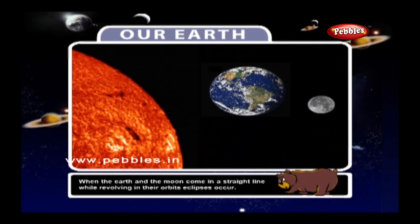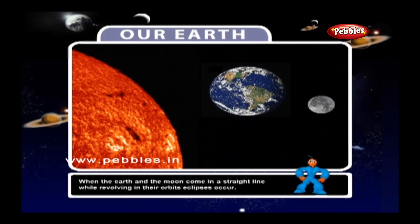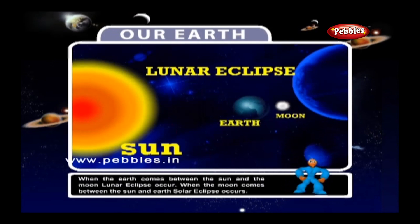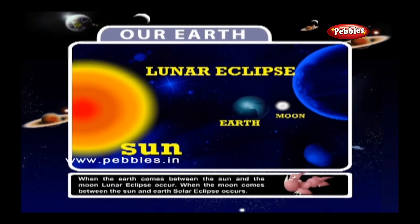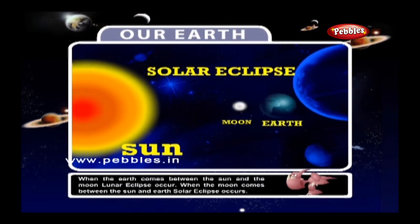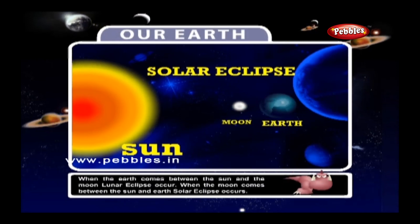When the Earth and the Moon come in a straight line while revolving in their orbits, eclipses occur. When the Earth comes between the Sun and the Moon, lunar eclipses occur. When the Moon comes between the Sun and Earth, solar eclipse occurs.